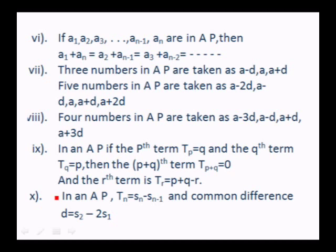In an AP, if the pth term tp = q and the qth term tq = p, then the (p+q)th term t(p+q) = 0, and the rth term tr = p + q − r. Also, tn = Sn − S(n−1), and the common difference d can be obtained as d = S2 − 2S1.